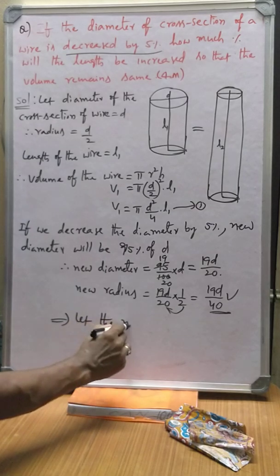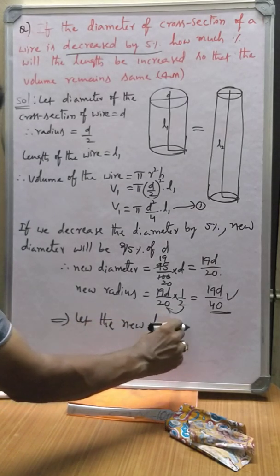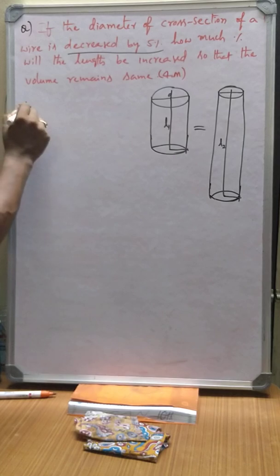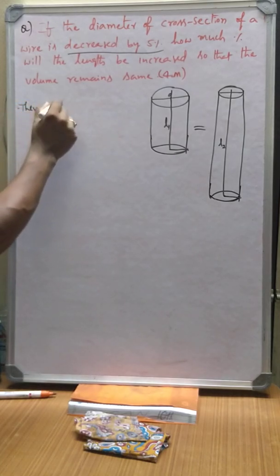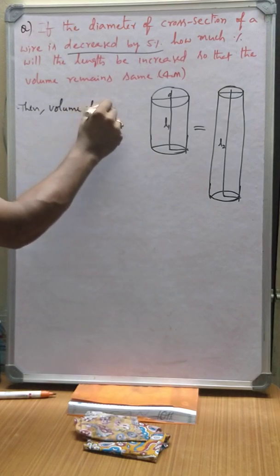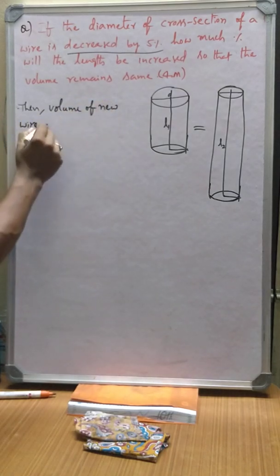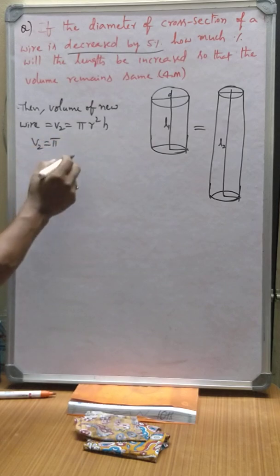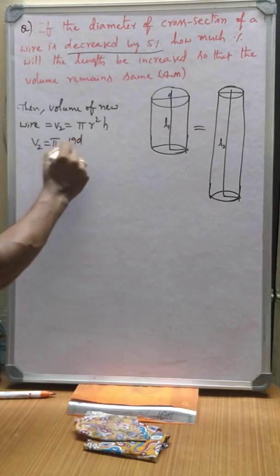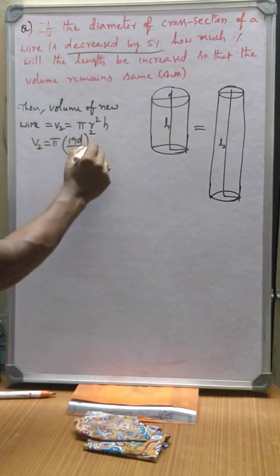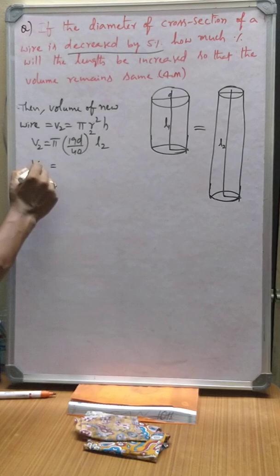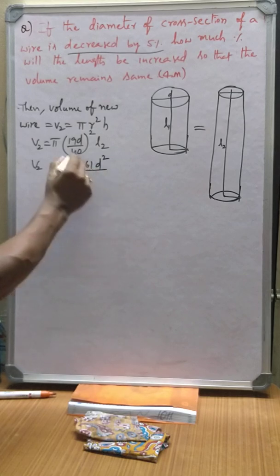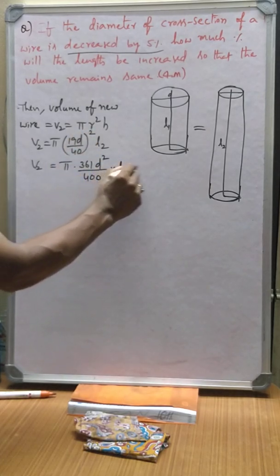Similarly, let the new length is equal to L2. Then volume of new wire after changing the diameter is, let it be V2, π R² H. V2 is equal to π, radius is 19D by 40, and length is taken as L2. That is equal to π, 19 square, 361 D² by 40 square means 1600 into L2.